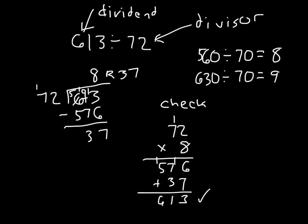And so that checks. So 613 divided by 72 does equal 8 with a remainder of 37. And you'll notice that this was our quotient. And as we stated within our objective earlier, we are working with single-digit quotients.